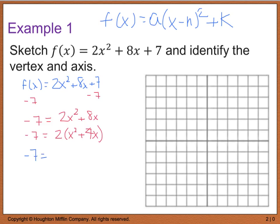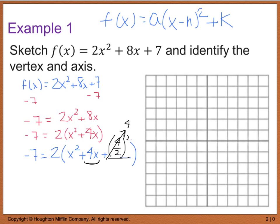Now I can complete the square on this piece. We have negative 7 equals 2 times x squared plus 4x plus blank. To find the missing term, take the middle coefficient 4, divide it by 2 to get 2, then square it to get 4. So we're adding 4 inside the parentheses. But since it's being multiplied by 2, we're technically adding 8 to the right side. So I must also add 8 to the left side, giving us 8 minus 7 equals 2 times the quantity x squared plus 4x plus 4.